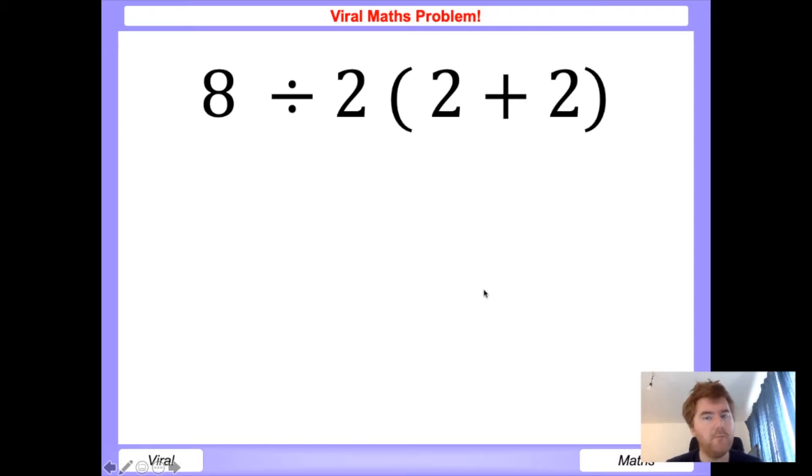divided by 2(2 + 2). I'm going to show you two ways of answering this correctly, because many people got the answer of 16. If you got 16, then you should be watching this video to see how it works. I think the most straightforward way, my Method 1, is to write